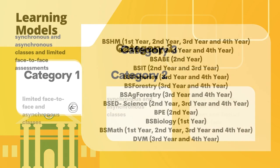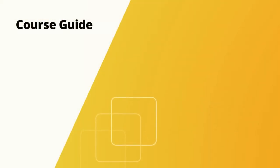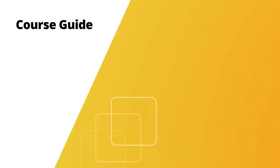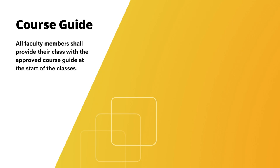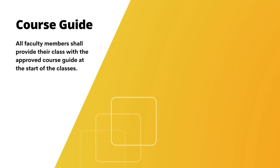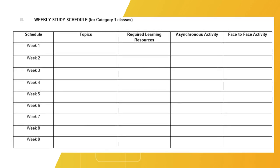The activities of the classes in Categories 1, 2, and 3 shall be disclosed in the course guides. All faculty members shall provide their class with the approved course guide at the start of the classes. There are three templates for the course guide. The columns of the course guide shall be filled out accordingly.